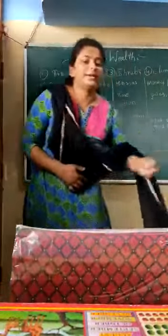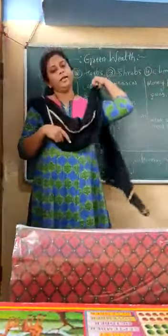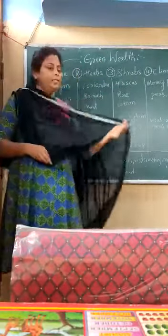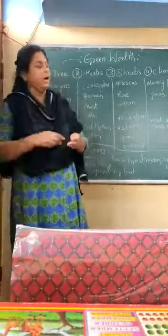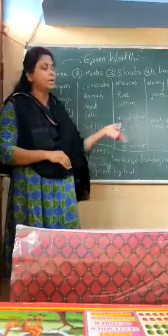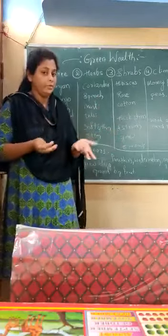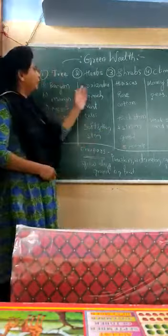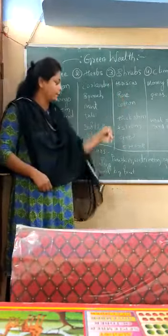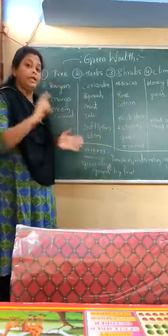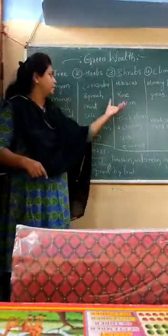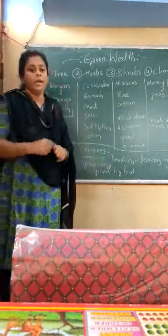Hi children, welcome back. I hope you all are doing well and enjoying these videos. In the last video we discussed about green wealth and how it is divided. We divided it into five types: trees, herbs, shrubs, climbers, and creepers. In the last video we also discussed briefly about trees, herbs, and shrubs.